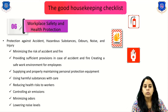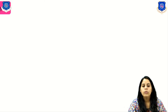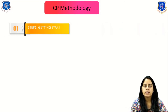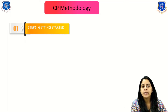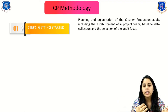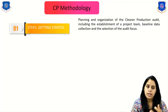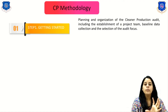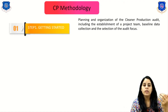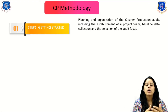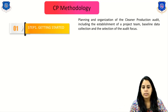That covers all the housekeeping checklist topics. Now the next topic is CP methodology — the Cleaner Production methodology. Step one is getting started, which involves the planning and organization of a production audit. It includes establishing the project team, baseline data collection, and selection of the audit focus. In this starting stage, we first form a project team and then select the audit focus.